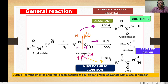This is the thermal decomposition of acyl azide. By heating, loss of nitrogen occurs and isocyanate forms — this is the rearrangement reaction: conversion of acyl azide into isocyanate. After that, addition of alcohols, water, or primary amines proceeds via nucleophilic addition to convert the isocyanate into urethane, amine, or urea.